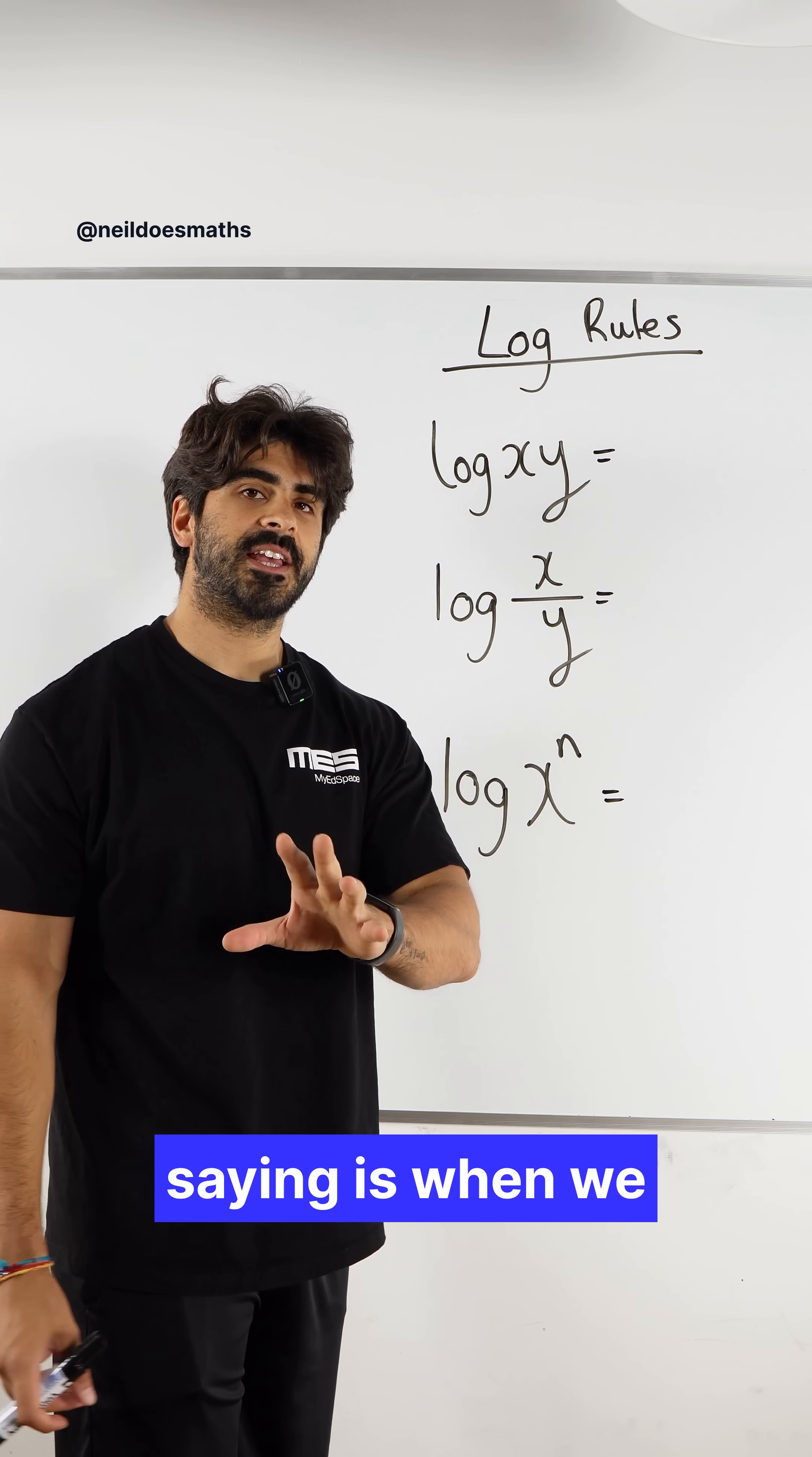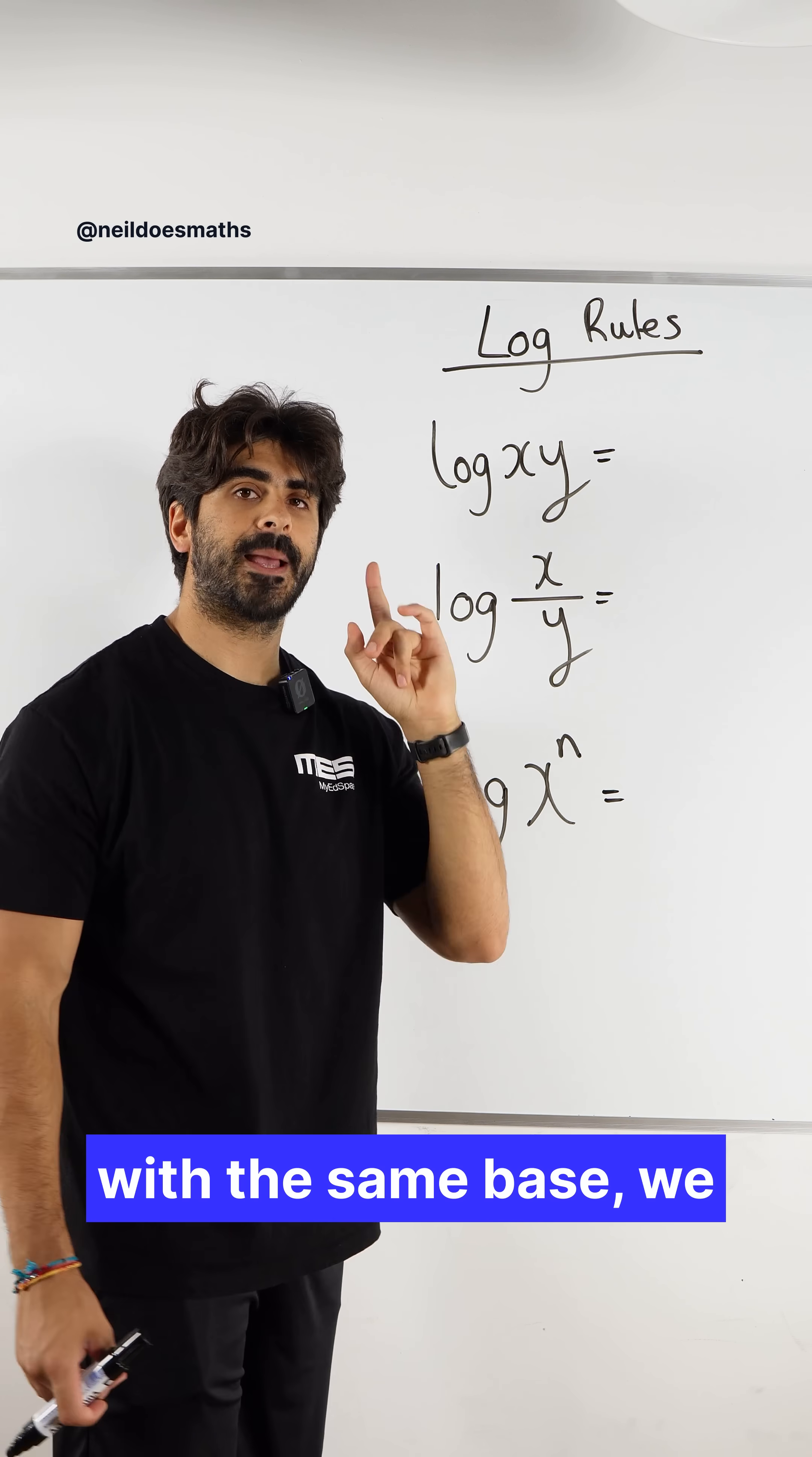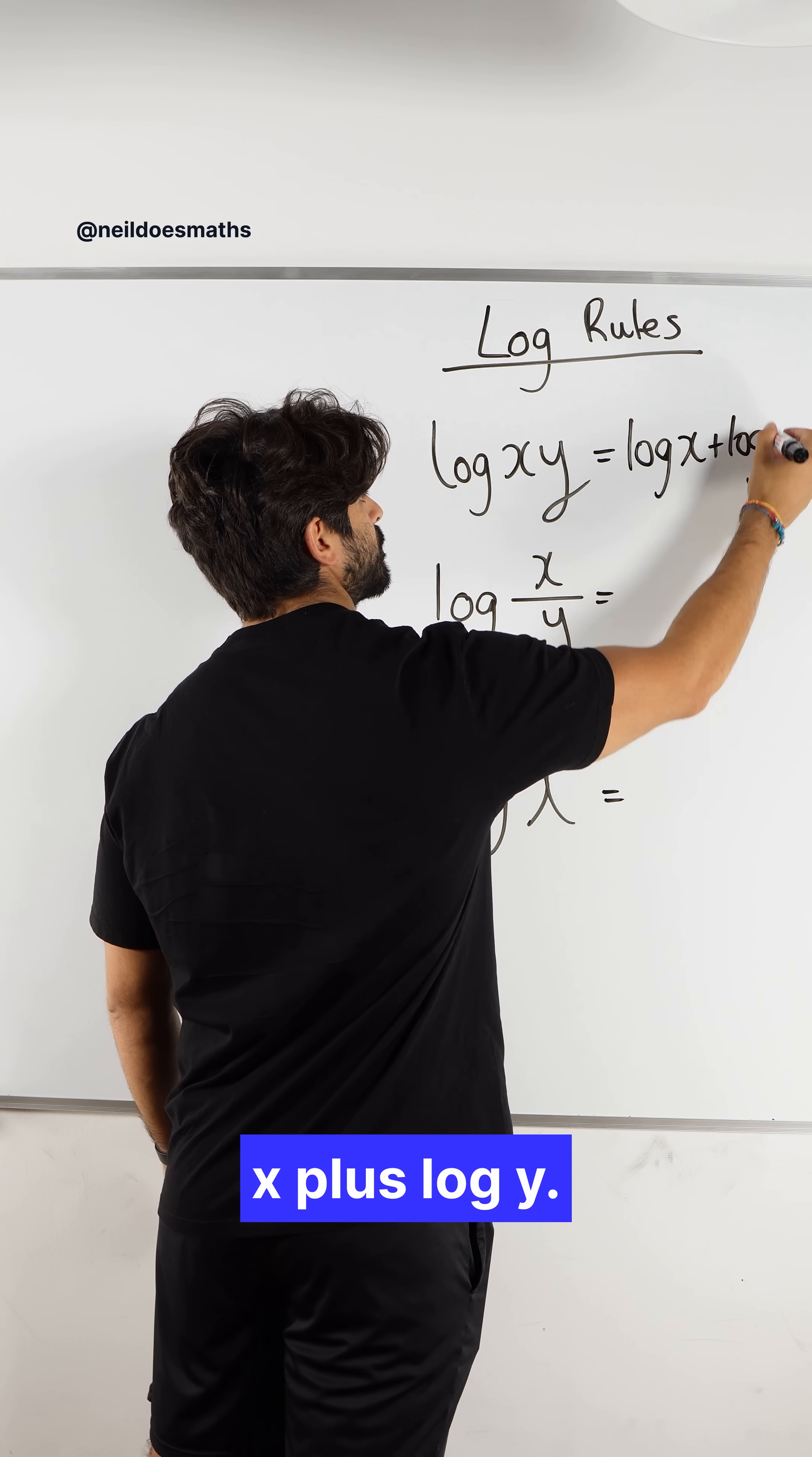When we have this situation, all it's saying is when we multiply two numbers with the same base, we add the powers. So we can rewrite this as log x plus log y.